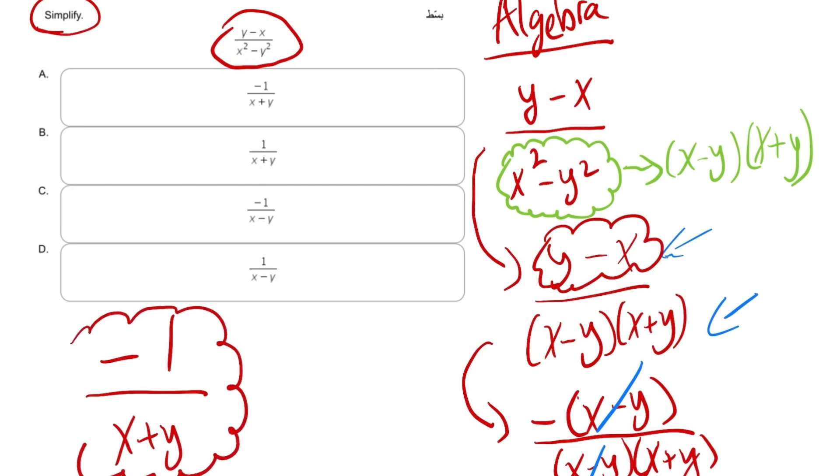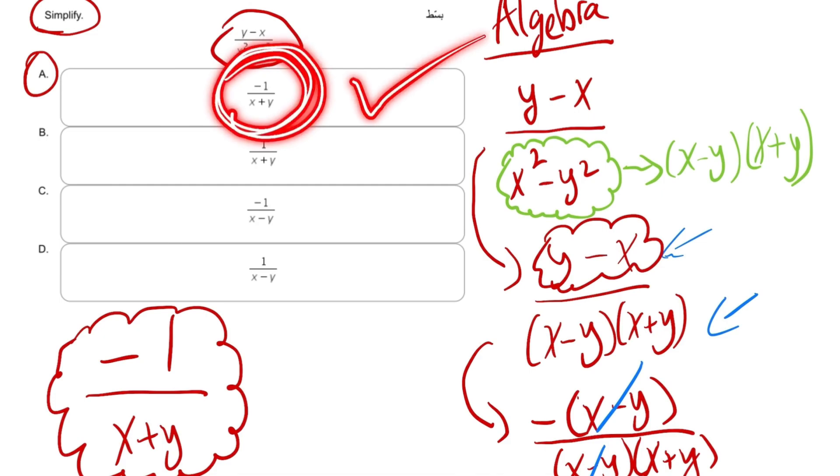So the answer will be minus 1 over x plus y. This is the simplest form for the expression. So if I take a look at the answers, the answer would be minus 1 over x plus y.